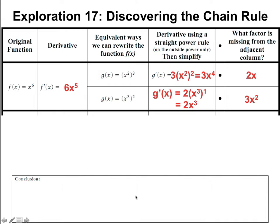Go ahead and complete the rest of the examples, try to find a pattern where this missing factor is coming from, and try to draw a conclusion. You might want to stop the video and accomplish that. The next couple of screens will go through the activity, so it's best if you complete it first and compare results.